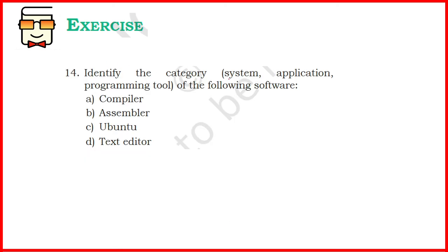The last question: identify the category — system, application, or programming tool — of the following software. A compiler is a language translator, so it comes under programming tools. An assembler is also a language translator and is a programming tool. Ubuntu is a system software, so it comes in the category of system software. A text editor is an application software.